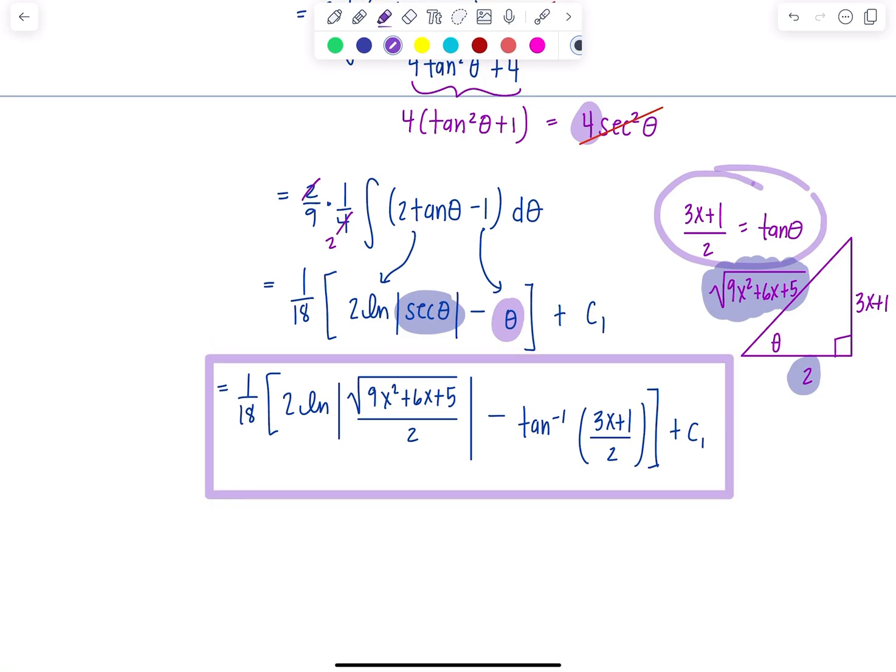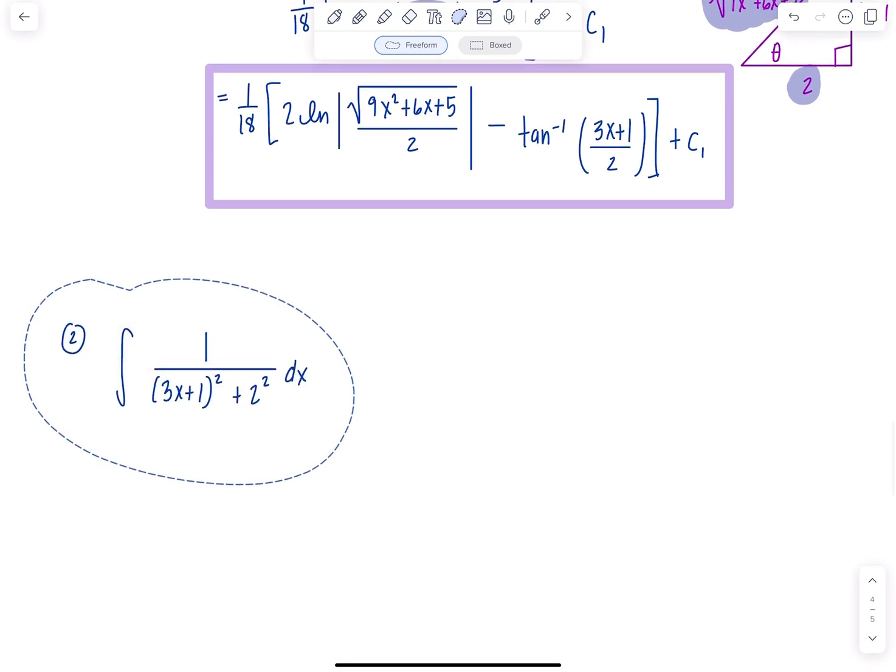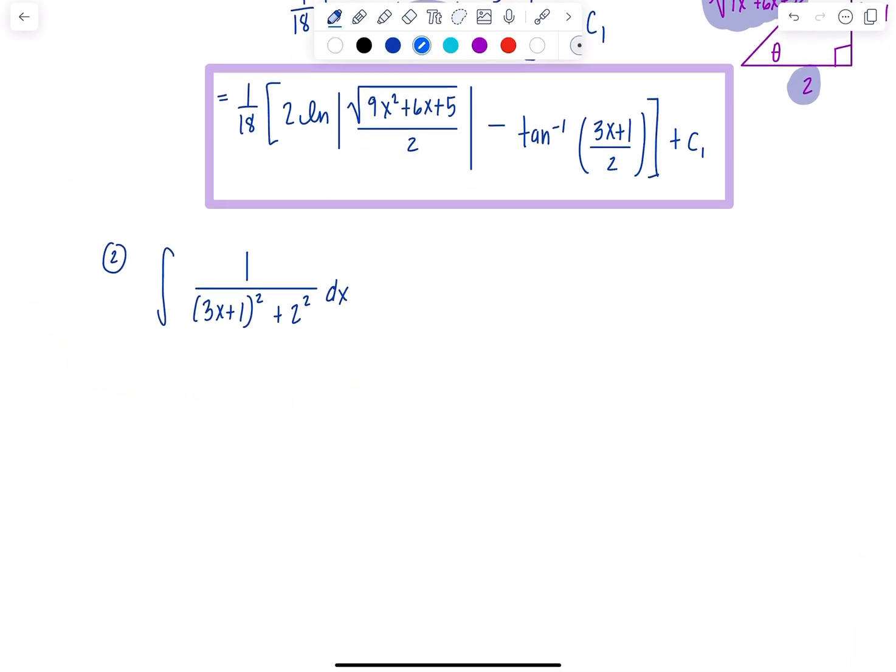Then we had the second part. This one's easy peasy. Recall integral 1 over x squared plus a squared dx is 1 over a tan inverse x over a plus c. You don't need to trig sub this. This is one just memorized. You could trig sub it, but I mean why?